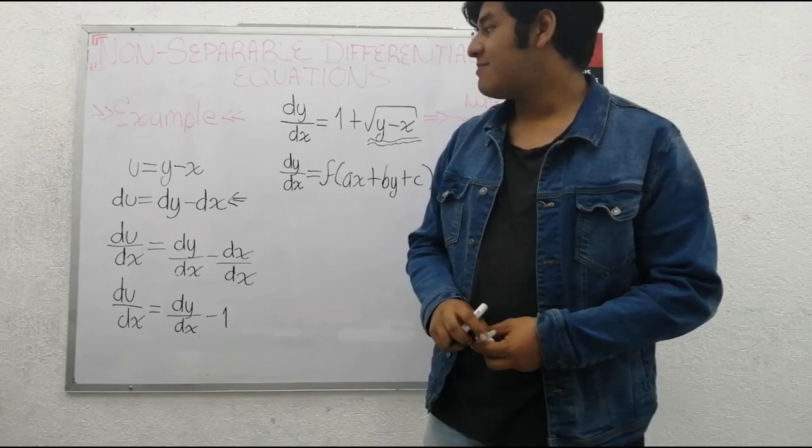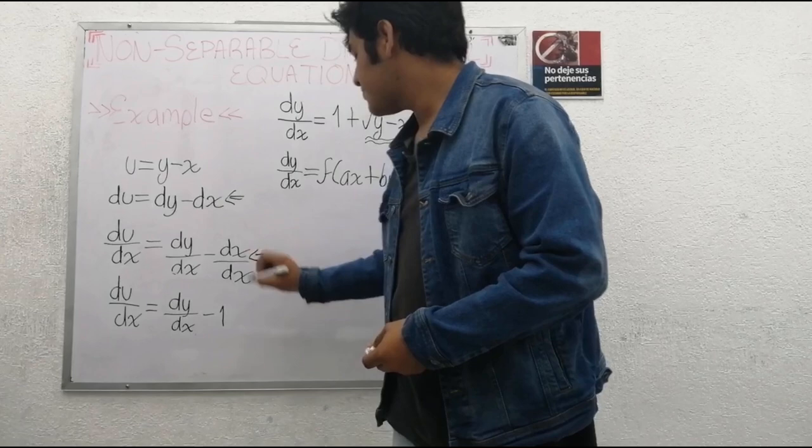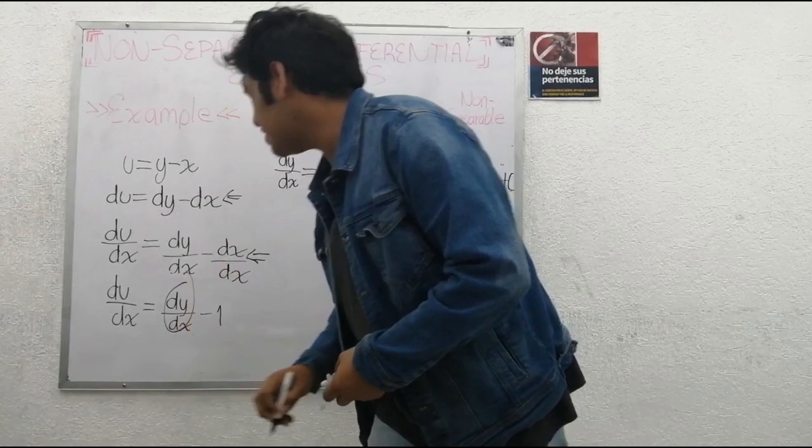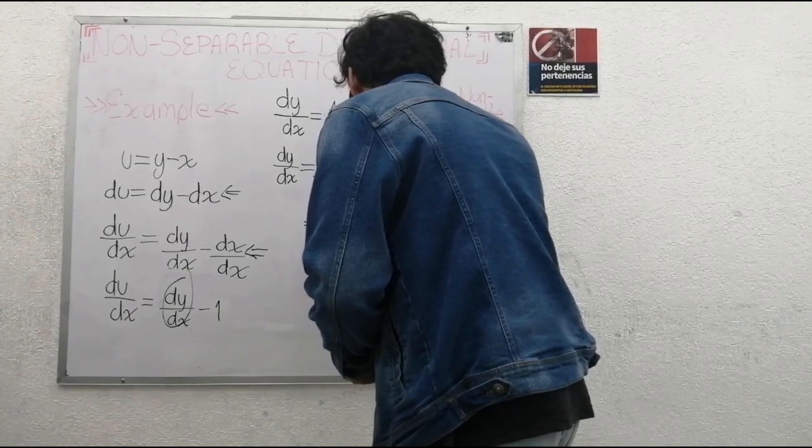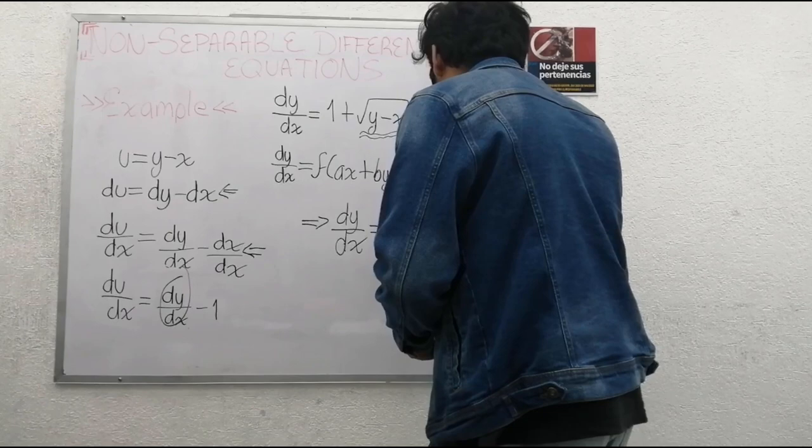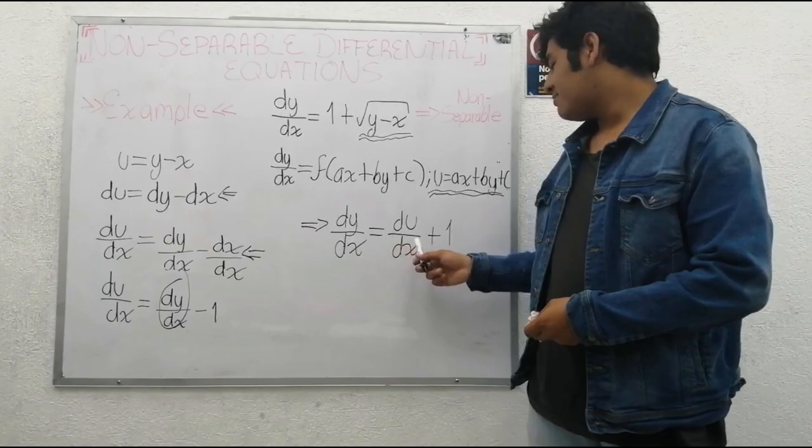Then we derive that expression and get the following. Now we divide the expression by dx. This gives us the term dy over dx. Doing this, we get that expression.